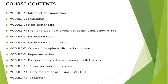Module 6 covers how to design a distillation column. We start by defining a shortcut column, determining the minimum number of stages, minimum reflux ratio, condenser duty, and reboiler duty — then proceed to detailed distillation column design using Aspen HYSYS.